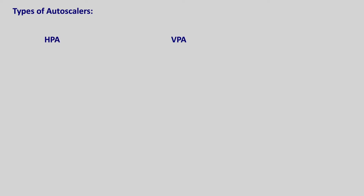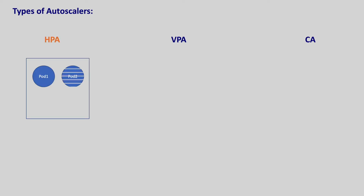Kubernetes offers three types of autoscalers: horizontal pod autoscaler, vertical pod autoscaler, and cluster autoscaler. Horizontal pod autoscaler increases the number of replicas whenever there is a spike in CPU, memory, or some other metric. That way, the load is distributed among the pods. And as we are increasing the number of pods, this is called scaling up.